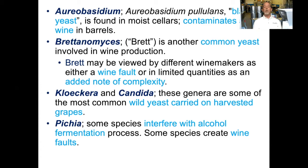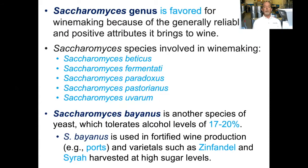Brett's impact on wine is debatable. Some people find that they like the added complexity that brett adds to a wine, but many consider this a wine fault. Kloeckera and Candida are some of the most common wild yeast carried on harvested grapes. Some species of Pichia interfere with alcohol fermentation and some species create wine faults. The genus Saccharomyces is favored for wine making because it generally produces reliable and positive attributes to the wine.